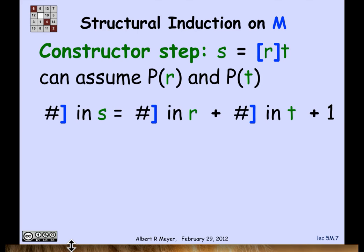Let's look at the number of right brackets in s. Where do they come from? The first symbol in s is a left bracket, so that doesn't matter. Then there are the right brackets in r, then a new right bracket gets added, then the right brackets in t. So the number of right brackets in s is the sum of those in r plus those in t plus one more, because the constructor threw in one more right bracket. By the same reasoning,